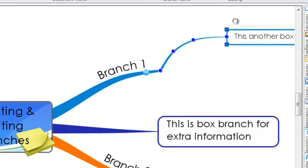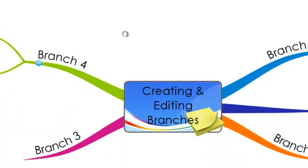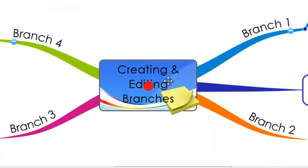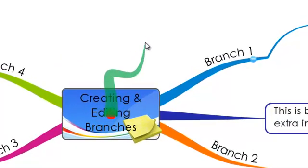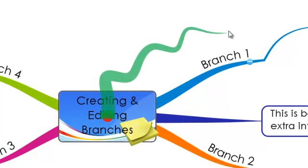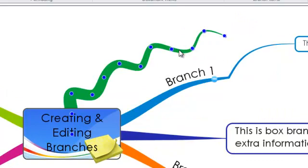You can see that iMindmap creates very curved, organic looking branches. But if you want to create a branch in your own shape, you can do this by selecting the freehand option on the top toolbar. Simply select freehand, go back to your map and create a new branch as usual. But you will notice that this time the branch will follow the exact path of your cursor so you can make any shape that you wish. You can add text to a freehand branch the same as any other branch by simply typing and hitting enter.